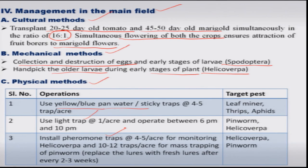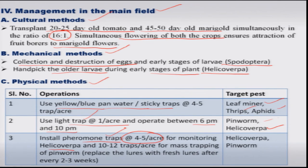Yellow or blue water pan traps or sticky traps will manage leaf miners, thrips, and aphids. Light traps at 1 per acre operated between 6 p.m. and 10 p.m. will manage Helicoverpa and pinworm. Pheromone traps for monitoring Helicoverpa can be installed at 4 to 5 per acre, and for pinworm mass trapping, 10 to 12 traps per acre are found to be quite effective.